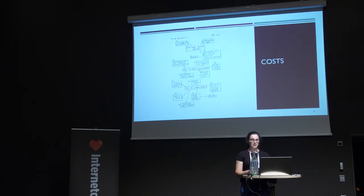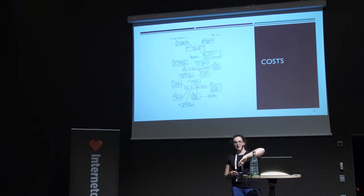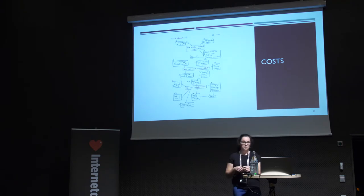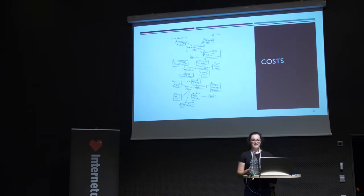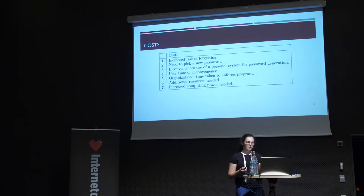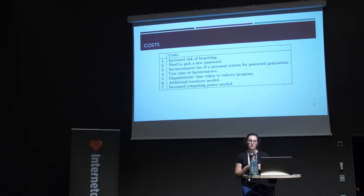To build a model for the costs, we took all the different advice statements and brainstormed all the costs associated with each one. For example, 'don't include personal information' is associated with costs like increased risk of forgetting, being impossible or hard to enforce, and inconvenience to a personal system for password generation. We did this for all advice statements and ended up with 10 different categories of costs, then narrowed them down to seven by removing overlaps.